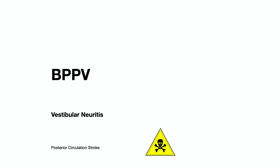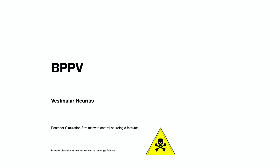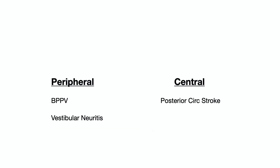BPPV is the most common and curable cause of vertigo. Vestibular neuritis is the most common cause of vertigo seen in the emergency department that presents with spontaneous nystagmus. And posterior circulation stroke is of course the most feared cause of vertigo because if you miss it, the patient may have a bad outcome, including death. In fact, most posterior circulation stroke syndromes have other neurologic features that would differentiate them from BPPV and vestibular neuritis. So let's look at a bare-bones central versus peripheral table and see how that would work with these three essential diagnoses.